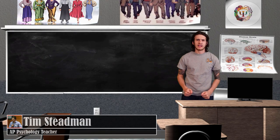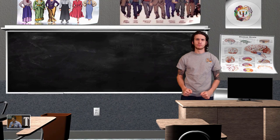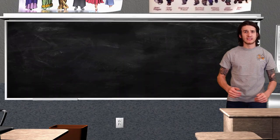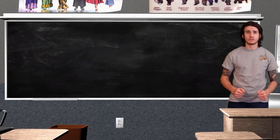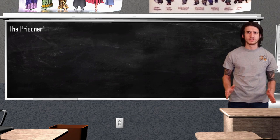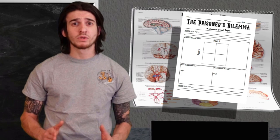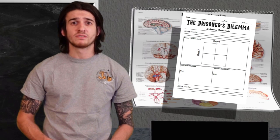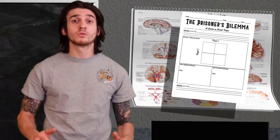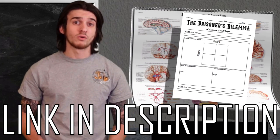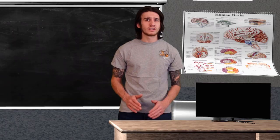How is it going AP Psych class, and welcome back for another FlexTime review. In today's lesson we are going to be talking about factors that lead to group conflict by taking a look at the classic social trap example, the prisoner's dilemma. If you would like to follow along with this video, there is a link in the description box that will bring you to a worksheet that goes along with the lesson. So let's get started.